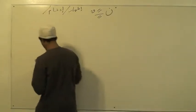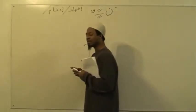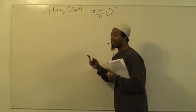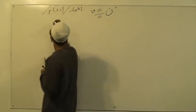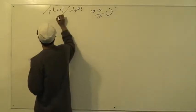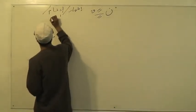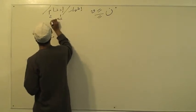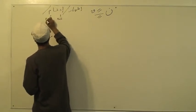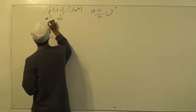We'll go to the other two rules some other time. Now, Idgham has how many types? Two types. One has Gunnah and one has no Gunnah.